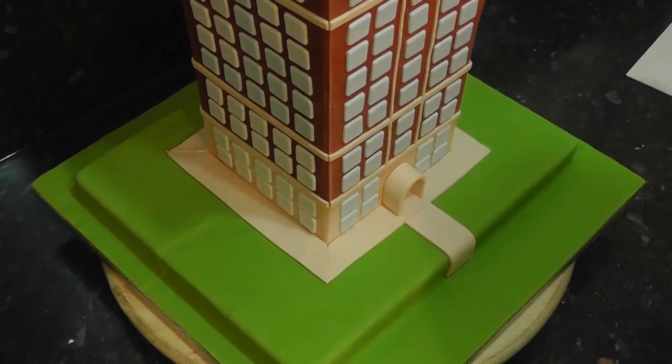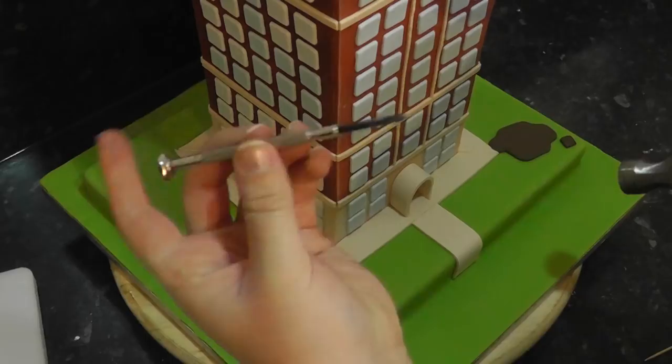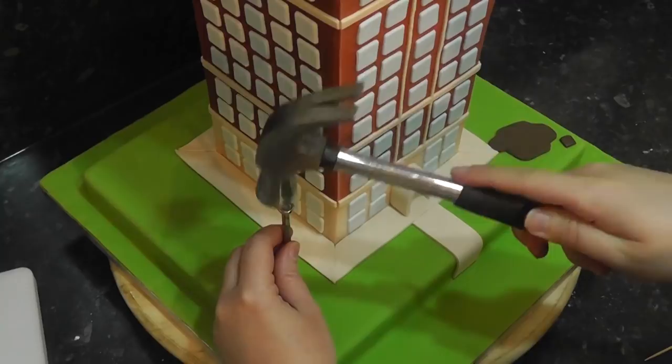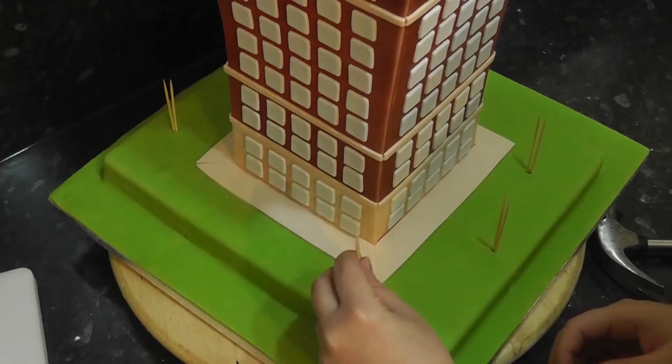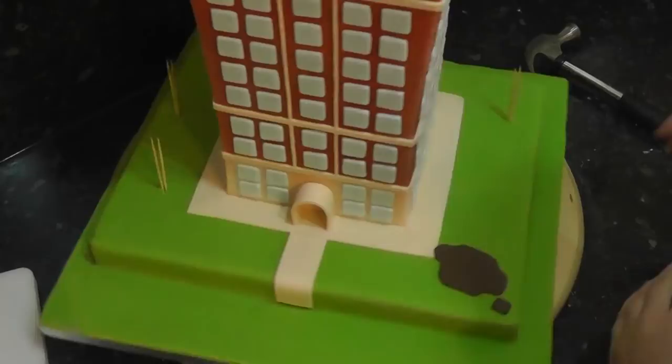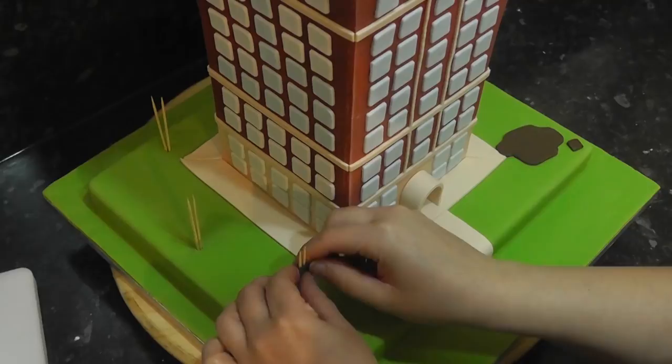To attach the trees grab a small screwdriver like a jeweller size and a hammer. Be careful not to wake your neighbours while you play Fix It Felix. Tap the top of the screwdriver until it makes a hole deep enough just to hold two cocktail sticks. Tape the sticks together with florist tape. Add cones of brown sugar paste over them to create tree trunks.